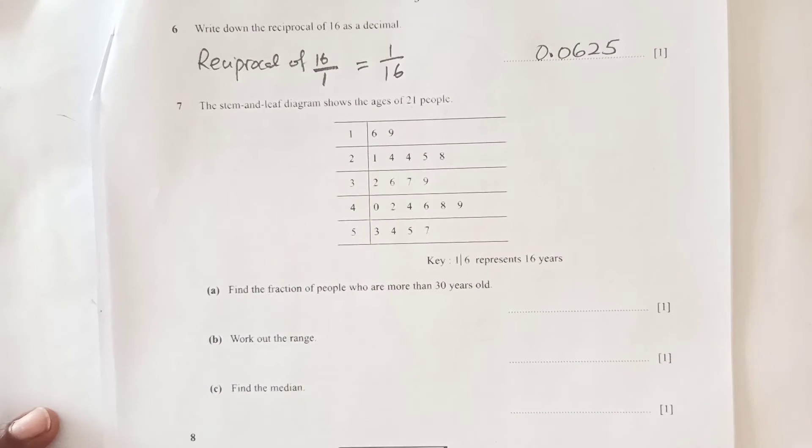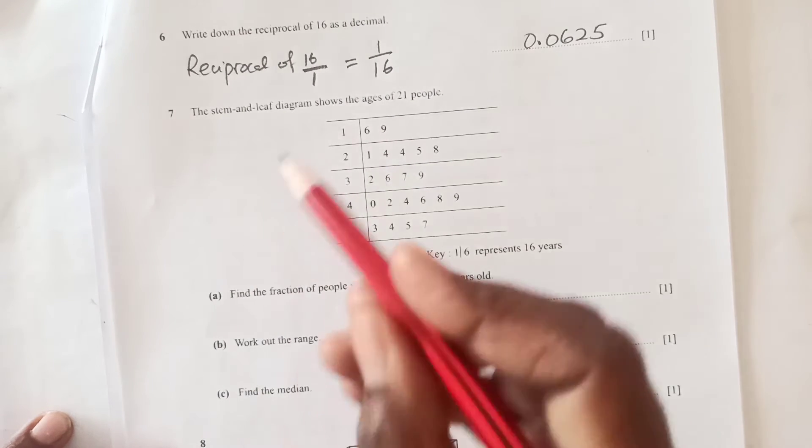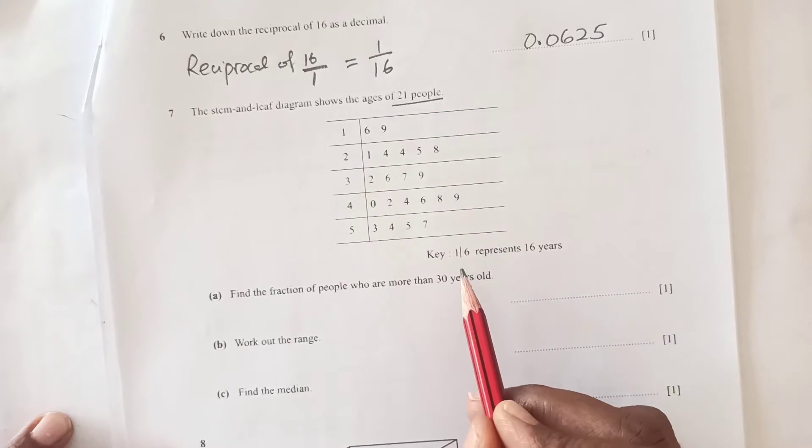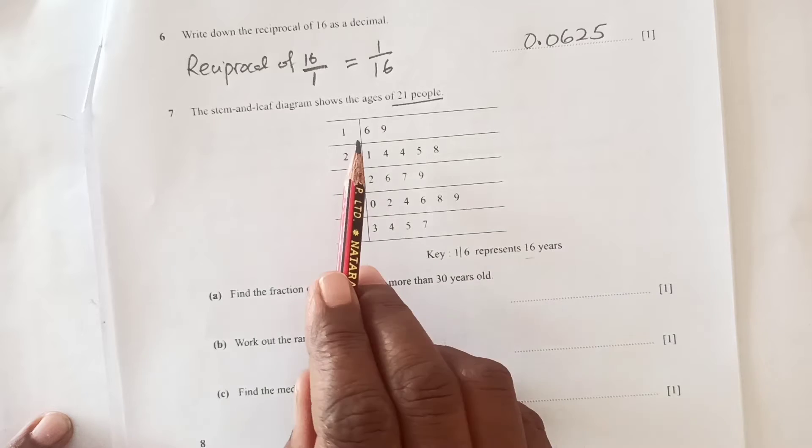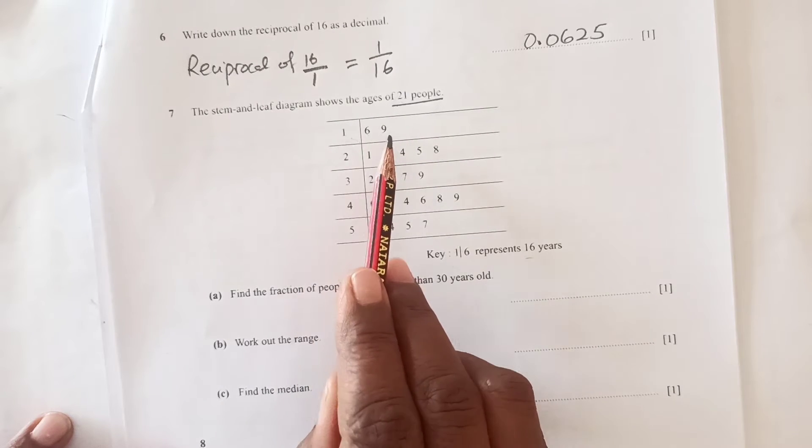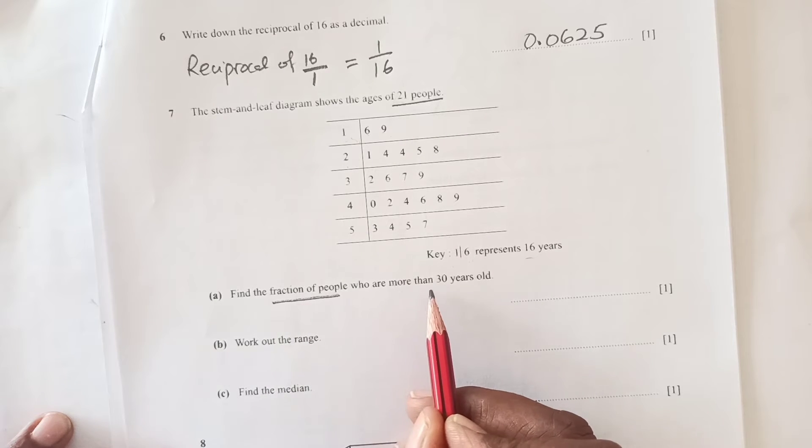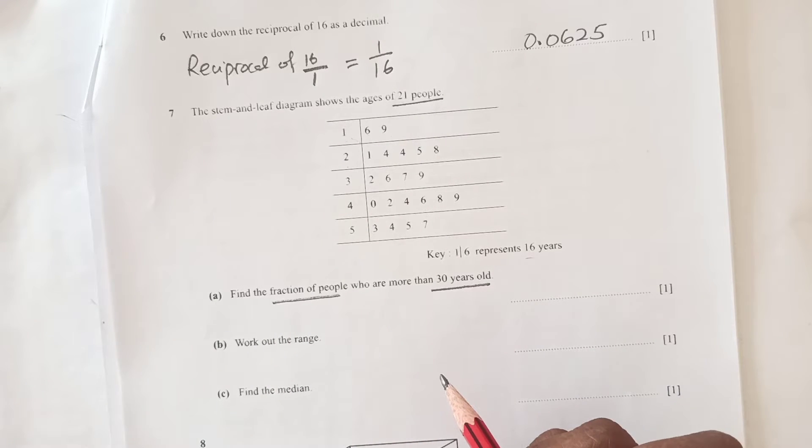Number 7: the stem and leaf diagram shows the ages of 21 people. The key is 1|6 represents 16 years, so this is 16 years, 19 years, 21 years. Find the fraction of people who are more than 30 years old.